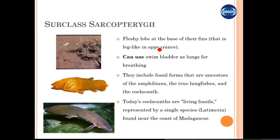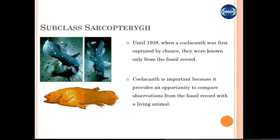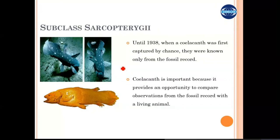The subclass Sarcopterygii is a little different — they are fleshy, lobed. You can see these fish have sort of legs present on their body; they are not rays. They can use the swim bladder as a lung for breathing. They include fossil forms: until the 1930s they were known only as fossilized fish, but later in the century, a few living specimens were found in Indonesia. This gave us a good chance to understand the evolution of how fish evolved into higher vertebrates and came out of water. They can use their legs to crawl on the surface and breathe in dry, terrestrial environments. Some members of this group, including mudskippers and lungfish, are known to live on the coast and can move some distances along it.